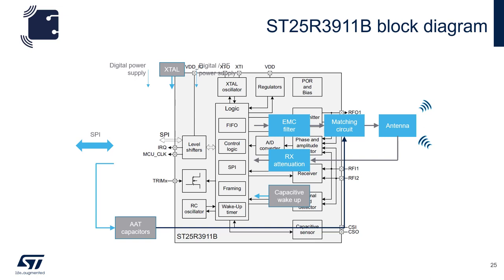On each of the trim pins, there's an internal switch that can be used to switch in the external automatic antenna tuning capacitors. The crystal oscillator is supplied by an external crystal of either 13.56 MHz or 27 MHz.